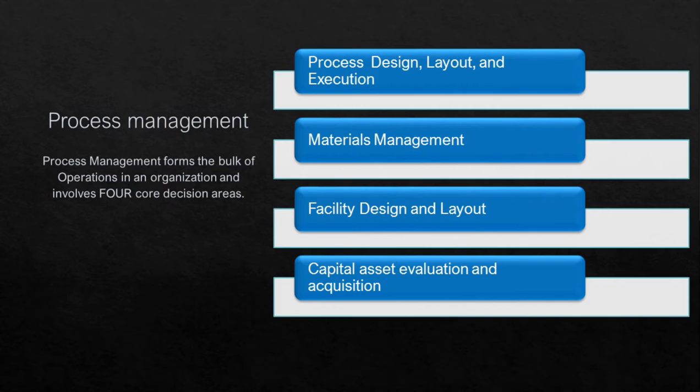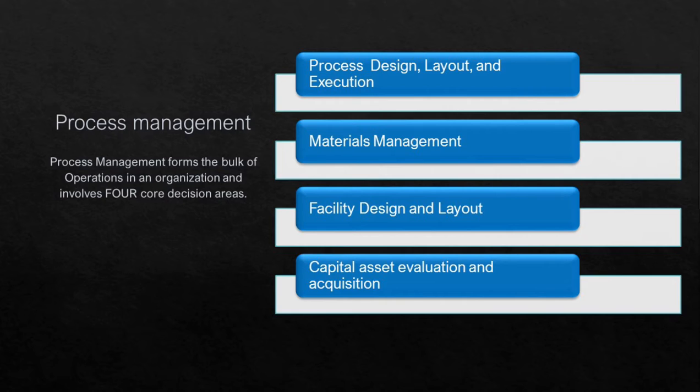Process management is the design and development of the workflow and connectivity of the operational requirements — the processes needed to ensure that our business produces products and services that are efficiently and effectively delivered to customers. We focus on specific tasks to be accomplished by the organization and their sequences to make the most efficient and effective workflow, and to determine how the transformation process of products and services will be designed. Our aim is to maximize efficiency.